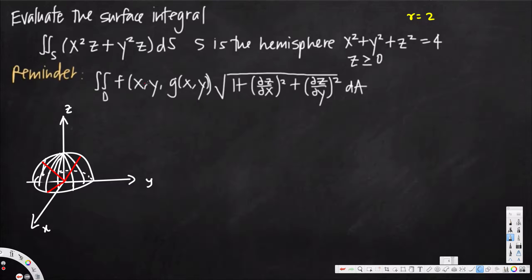To find the surface integral we use the equation: double integral of f(x, y, g(x,y)) times the square root of 1 + (∂z/∂x)² + (∂z/∂y)² dA. First we need to find the partial derivatives of z with respect to x and y.